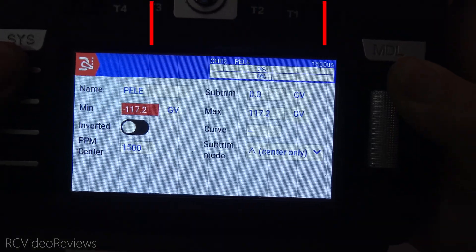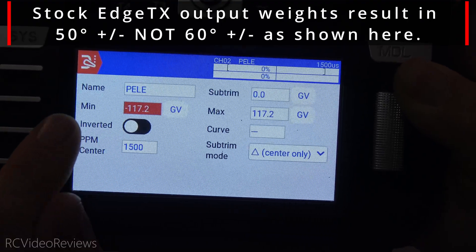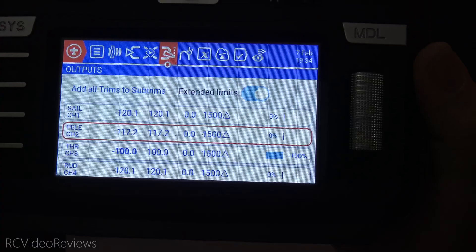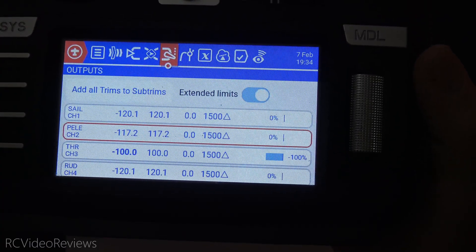Before I move on to programming the servos, I'll give you a quick look at my radio setup. I'm using negative 117.2 on the min, positive 117.2 on the max. With extended limits on, you have the ability to set your pulse width outside the default range of 998 to 2012.